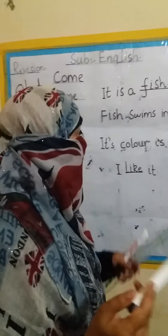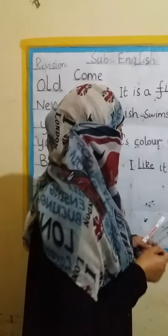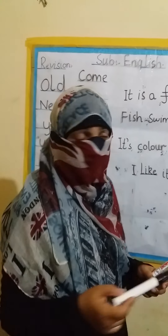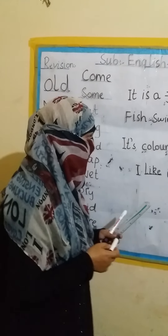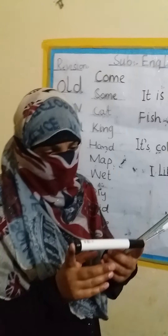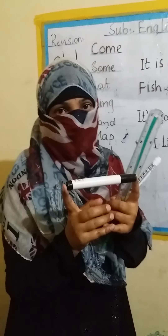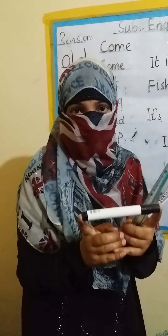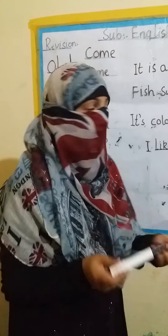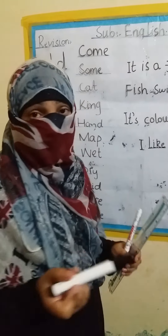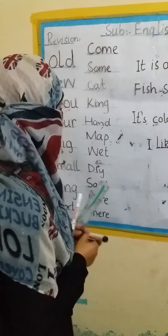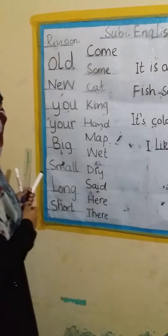You can make a sentence of your own words, like: this is a marker. The color of the marker is white and black and we can write with it.